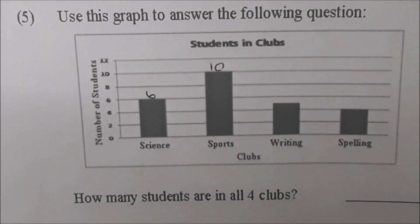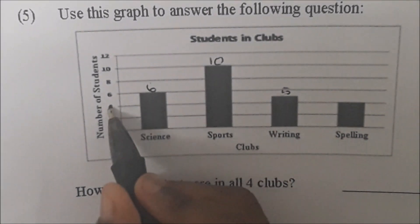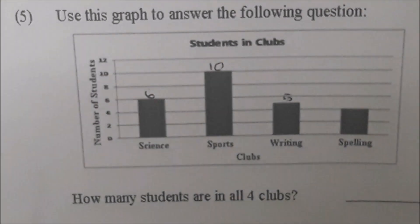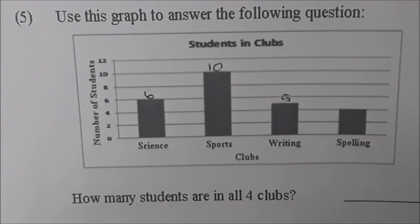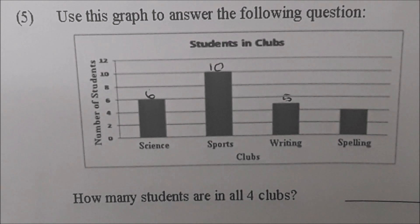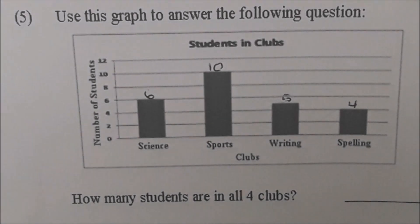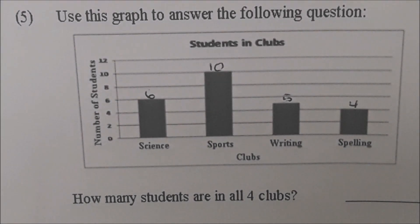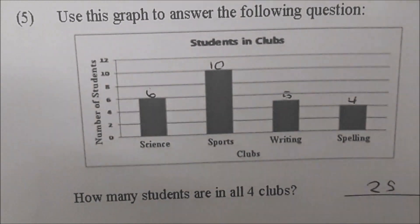Go to the writing club. What number would you put on the writing? Five. Why would you put five? It's between halfway between four and six, so it has to be five. Go to the spelling club. What would you put for the spelling club? Four. So those are the numbers you have to add. Add them up, Sky. Twenty-five. Very good. Put the answer on the line. Excellent job, Sky.